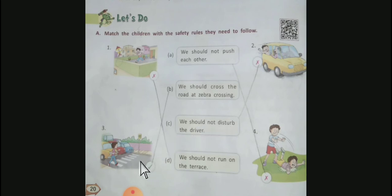Picture number three: The boy is crossing the road by walking on zebra crossing. This is safe and is matched with B: We should cross the road at zebra crossing.